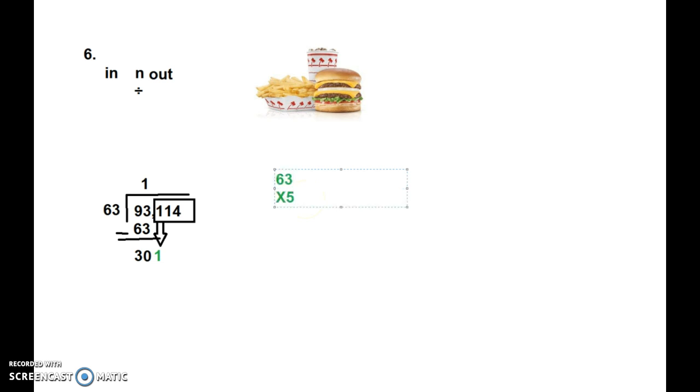63 times 5. Okay. And that is going to be a nice little pound for us. 5 times 3 equals 15. Bring my 1 up here. 5 times 6 equals 30. Plus I have that 1 there, so it becomes, I'm sorry, 31.